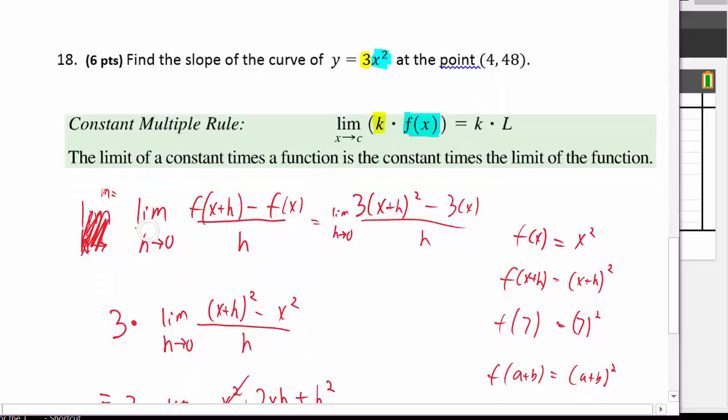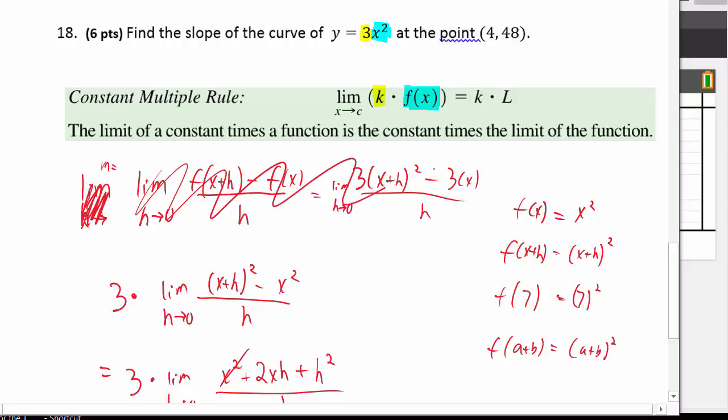I'm using this definition of a limit. If you did the whole thing without factoring, you'd have to expand this and distribute the 3 and take it out. Instead of doing all that, I'm going to rewrite it this way. I'm not going to do it this way, which you could.